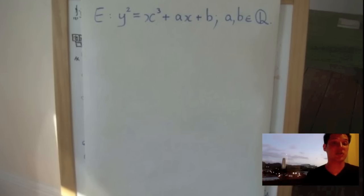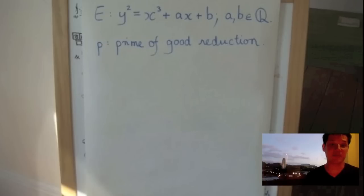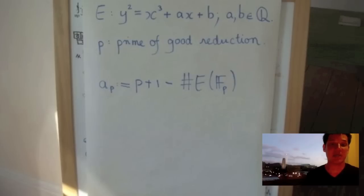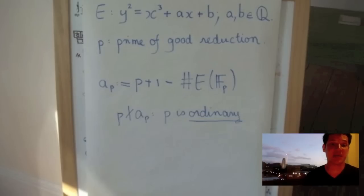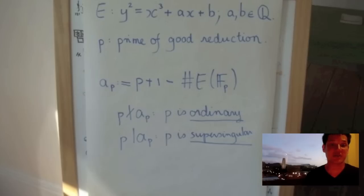Since we're concerned with Iwasawa theory for elliptic curves, fix an elliptic curve E over Q, let P be a prime of good reduction. We also assume that P is odd throughout this video abstract. We let AP be equal to P plus 1 minus the number of FP rational points of E, and we say that the prime P is ordinary if P does not divide AP, and we say that P is supersingular if P does divide AP.